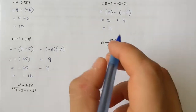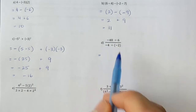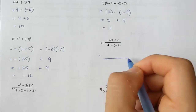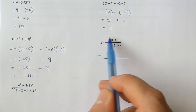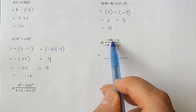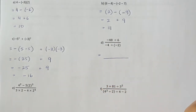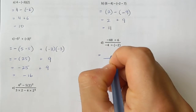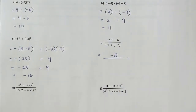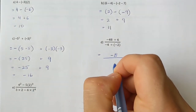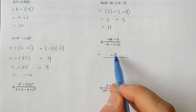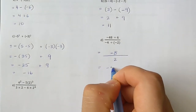Negative 48 divided by 6, over negative 4 divided by negative 2. Focusing on the numerator: 48 divided by 6 is 8, but negative divided by positive gives negative 8. In the denominator, negative 4 divided by negative 2 is positive 2, because a negative divided by a negative is positive. So negative 8 divided by 2 equals negative 4.